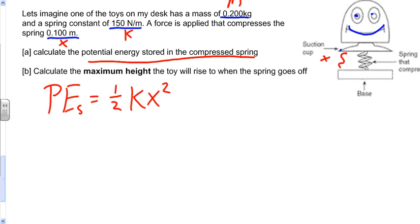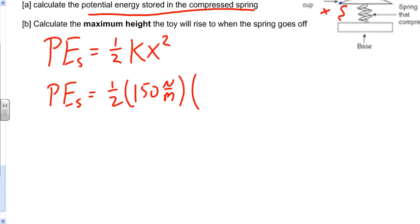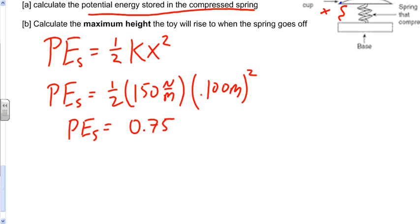Plugging into the spring potential energy formula: PE = ½ × 150 newtons per meter × (0.100 meters)². Solving through, the potential energy stored in the spring is 0.75 joules.